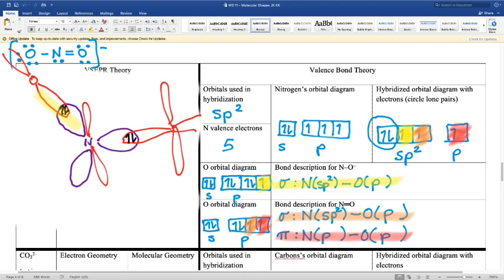These overlap, and this one overlaps with this one. Then this is my lone pair. So this is my sigma bond. And then my pi bond is the side-to-side overlap of these guys. That's my lone pair.